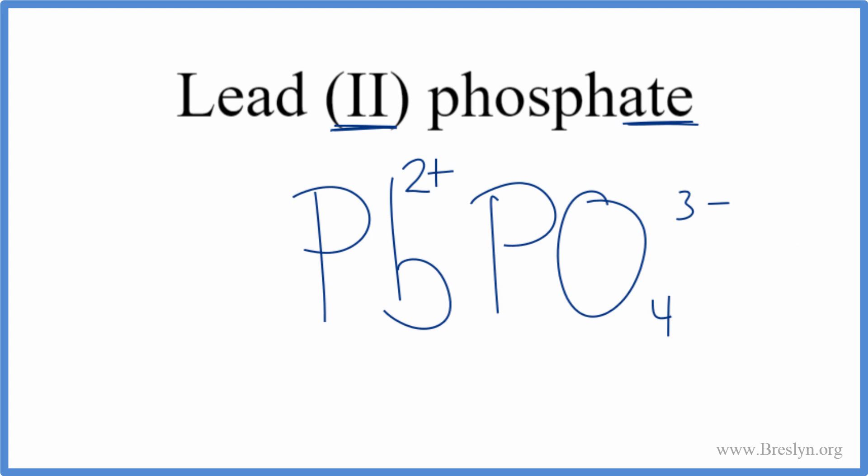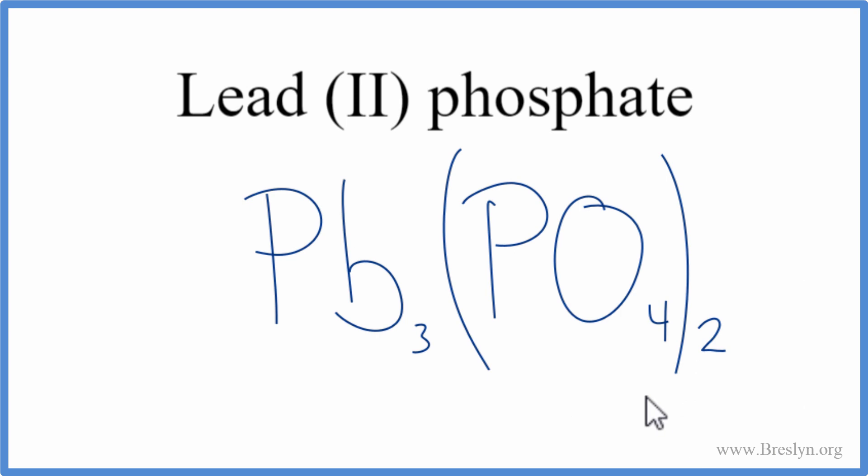We can change the subscripts using something called the crisscross method. We can move the 3 over here and the 2 out here, get rid of these charges, and then we do need to put parentheses around our polyatomic ion. We have two of them, so we'll put parentheses around the phosphate. This is the formula for lead(II) phosphate.